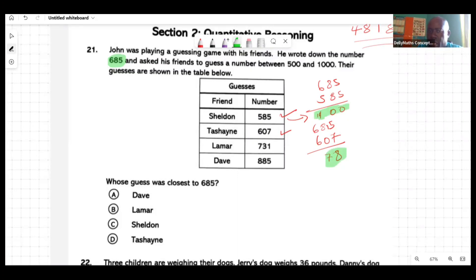Let's look at Lamar. We're talking about 731, and we want to check how close it is. The 731, we want to see how close is that to the 685, and that's about 46. So Lamar is leading at this point. Let's check Dave: 885 minus 685, and this is 200. After subtracting, you're seeing which one is close. The question is we want to know which one is closer or the closest to 685, and then definitely everybody would see that Lamar is the answer.